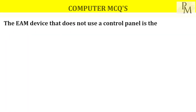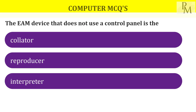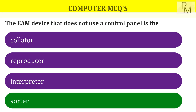The EAM device that does not use a control panel is? The options are collater, reproducer, interpreter, and sorter. The EAM device which does not use a control panel is the sorter. The answer is sorter.